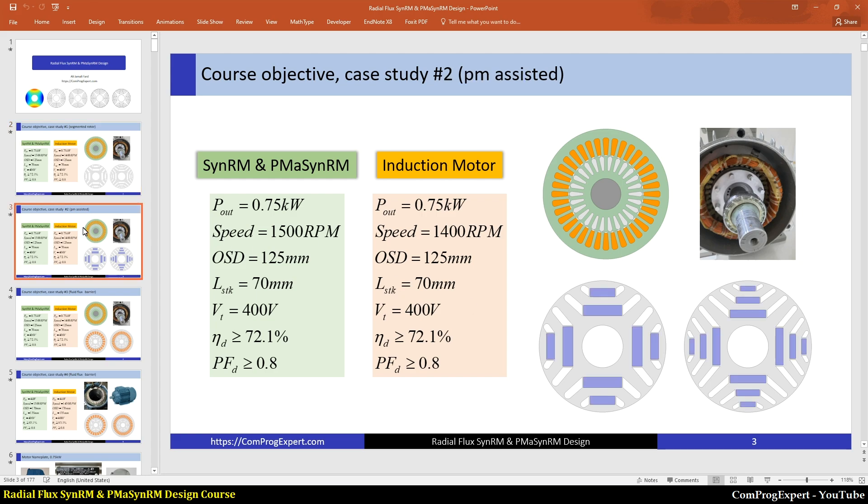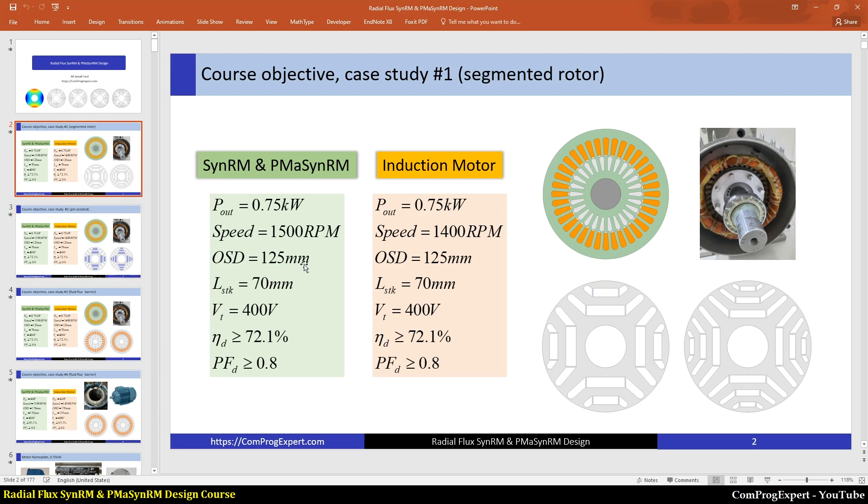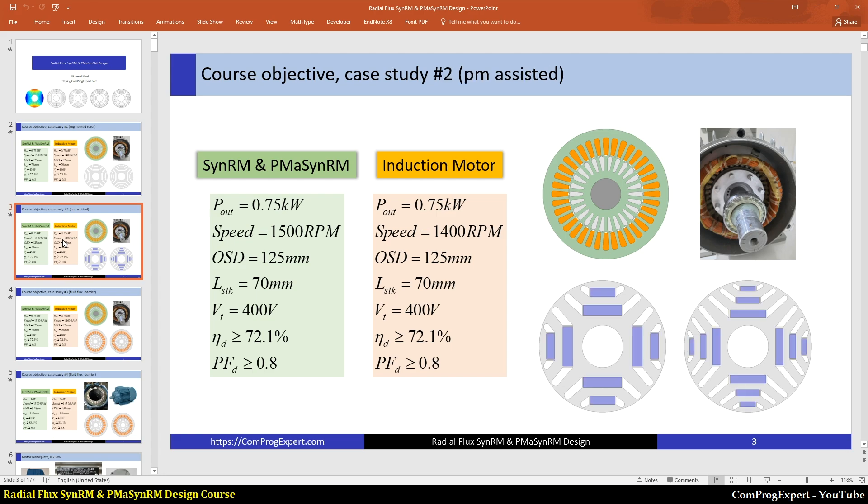So in the next example, we will add permanent magnets. The rotor geometry, the rotor lamination is the same. And just we add magnets to improve the performance characteristics of the motor and compare.